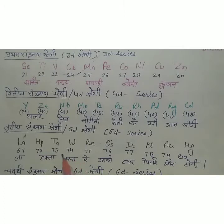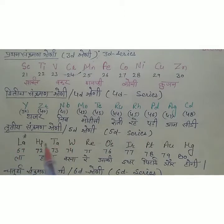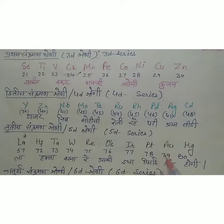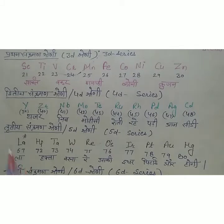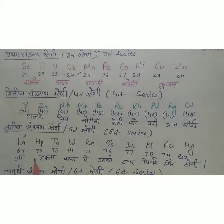The 5d series mnemonic is a story of two friends: 'La Hafta Verna Ray, Uski Idhar Pt Au Aur Hogi.' La = Lanthanum; Hafta = Hafnium, Tantalum; Verna = Wolfram (Tungsten); Ray = Rhenium, Osmium; Uski = Iridium; Idhar = Iridium; Pt = Platinum; Au = Gold; Hg = Mercury. Note: lanthanum is 57 and hafnium is 72 — a gap of 15 because 14 lanthanide f-block elements are filled in between.